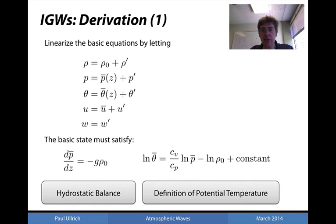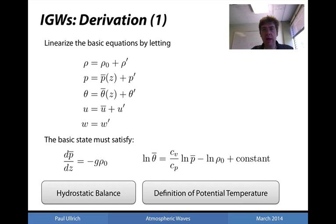We're going to linearize the basic equations by setting up a mean state. We assume roughly constant background density — rho-naught is constant and not a function of height — however, pressure and theta are both functions of height, and we have a mean background flow u-bar which is uniform in space. The mean background state must satisfy the zero-order equations; that is, it must satisfy hydrostatic balance, dp-bar/dz = −g·rho-naught, and the potential temperature equation.